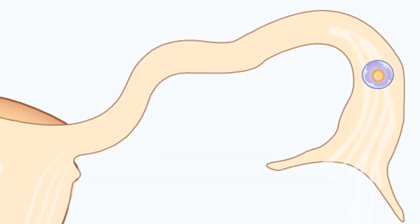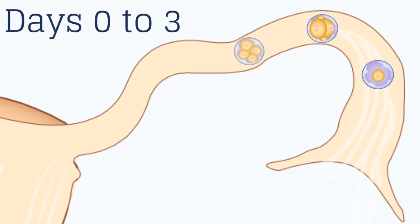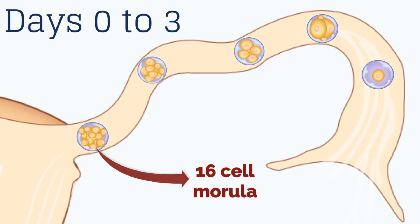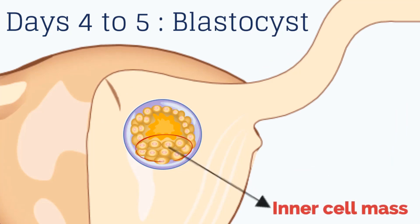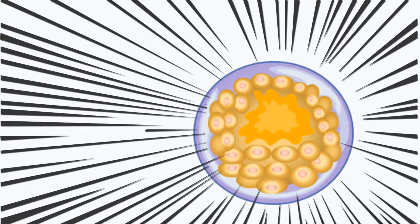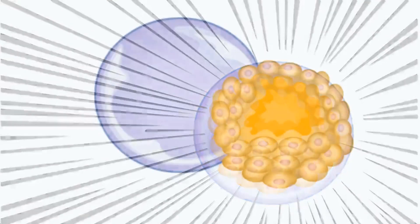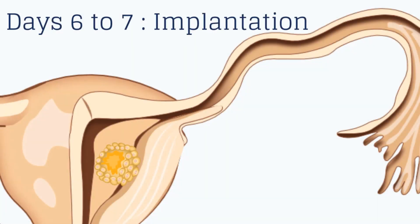Fertilization typically occurs in the ampulla, creating a zygote. The zygote is surrounded by a glycoprotein layer called the zona pellucida. From day 0 to 3, division occurs to form the 16-cell morula, which nears the uterus. On day 4 to 5, differentiation begins and the blastocyst forms, consisting of an inner cell mass, outer cells called trophoblasts, and a fluid-filled cavity called a blastocele. In the uterus, the blastocyst hatches from the zona pellucida in response to proteases secreted by the endometrium, and then implants into the endometrium at days 6 to 7.